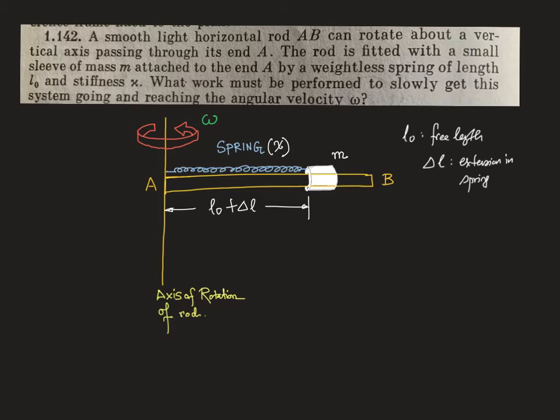Now, what is the spring force? The spring force is chi multiplied by delta l, and you can write the centrifugal force as m times (l0 plus delta l) times omega squared.